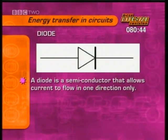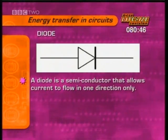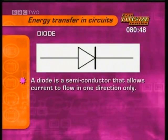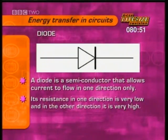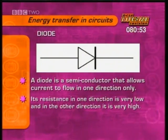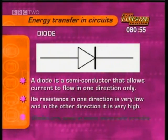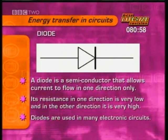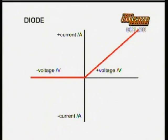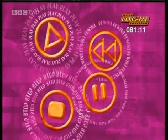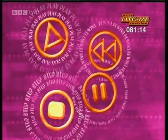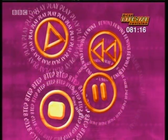A diode is made from semi-conducting material that allows current to flow through it in one direction only. Its resistance in one direction is very low, and in the other direction it's very high. Diodes are used in many electronic circuits. The current-voltage graph for a diode shows that current flows for positive voltages, but no current flows for negative voltages. That's the end of this higher tier section on energy transfer in circuits.